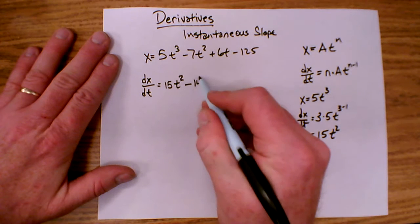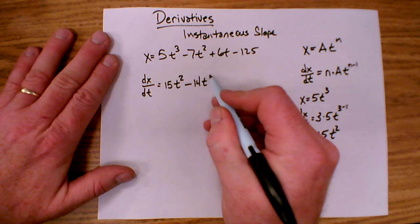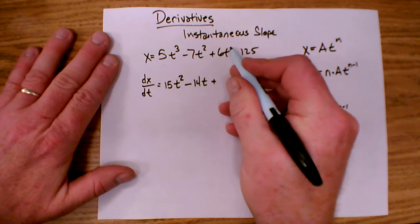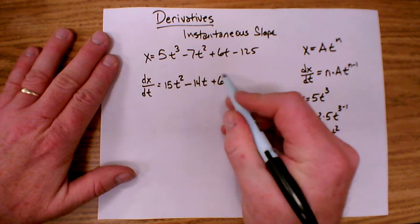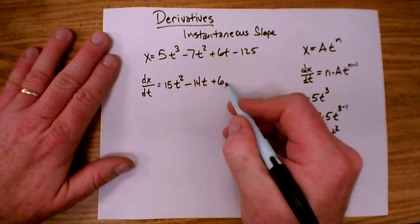minus 2 times 7 t to the 2 minus 1, plus 1 times 6 t to the 0. T to the 0 is 1, so that's just 6.